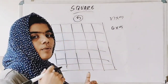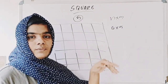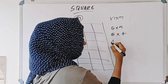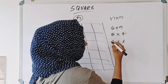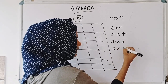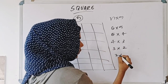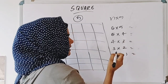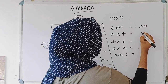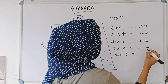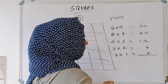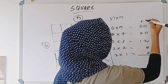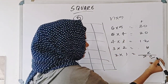Then we count: 1, 2, 3, 4, 5, 6 on one axis and 1, 2, 3, 4, 5 on the other. Going through the combinations: 6 into 5 is 30, 5 into 4 is 20, 4 into 3 is 12, 3 into 2 is 6, 2 into 2 is 2. The total comes to 30 plus 20 plus 12 plus 6 plus 2. Adding gives 7 here and 7 here.